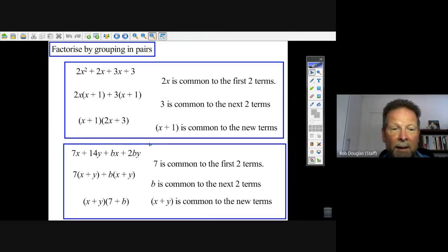Okay, so let's take a look at this one. Well, the 7x and the 14y, I can see 7s in both of these, so I go 7 times x plus y. And here I see b is in both of these, so I go b times x plus y.